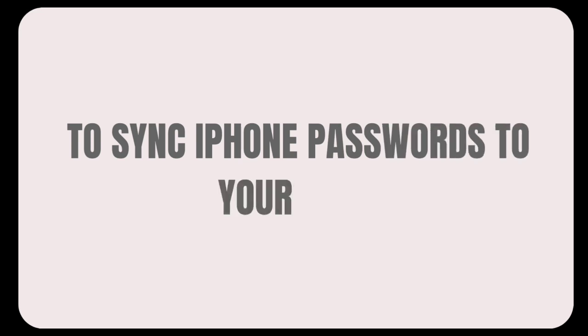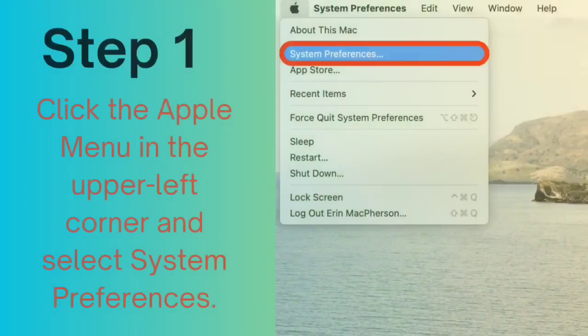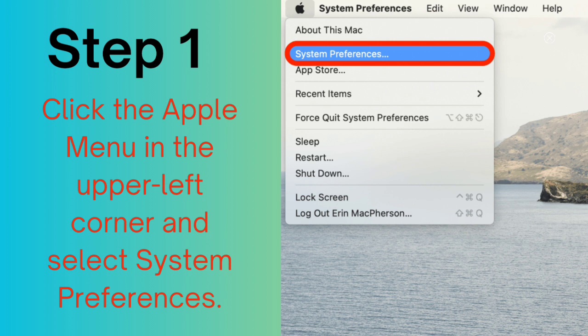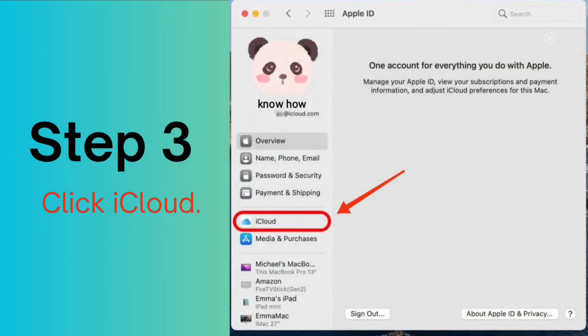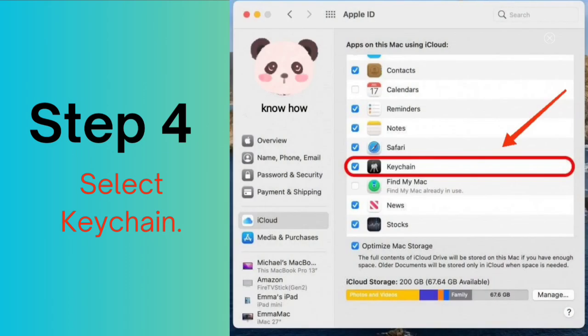To sync iPhone passwords to your Mac: Step 1: Click the Apple menu in the upper left corner and select System Preferences. Step 2: Click Apple ID. Step 3: Click iCloud. Step 4: Select Keychain.